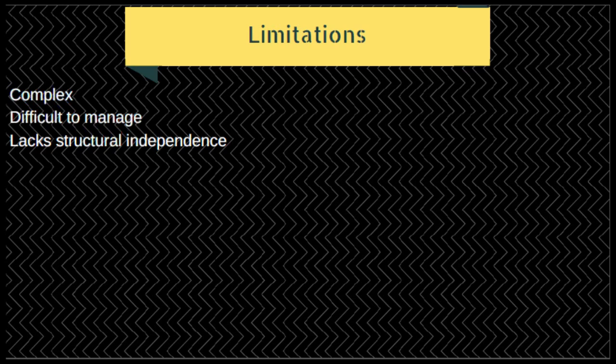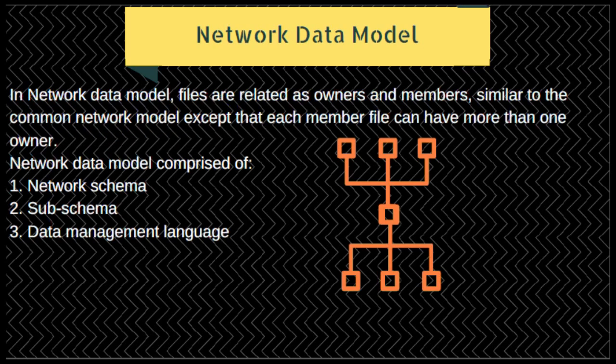The network data model emerged in the 1960s when Charles Bachman developed the first DBMS at Honeywell, called Integrated Data Store (IDS). It was standardized in 1971 by CODASYL — the Conference on Data System Languages. In this model, files are related as owners and members, except that each member file can have one or more owners.